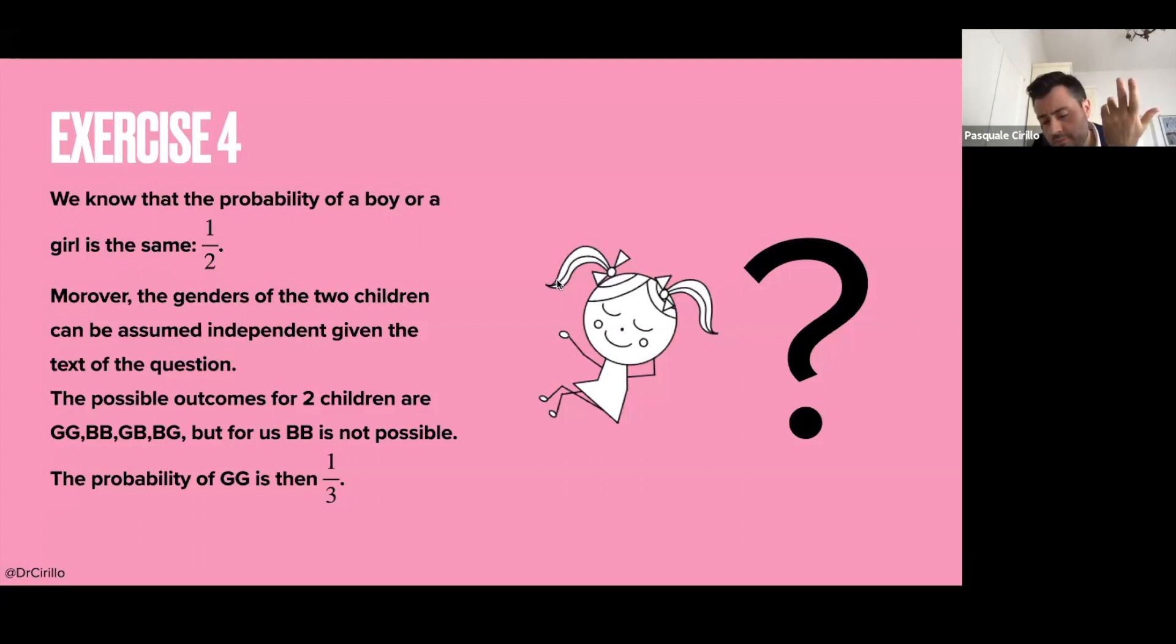Now, if I consider two children, there are four possibilities. I can have two girls that we call GG. I can have two boys that I call double B, so BB. I can have a girl and a boy, so GB, and I can have a boy and a girl, so BG.